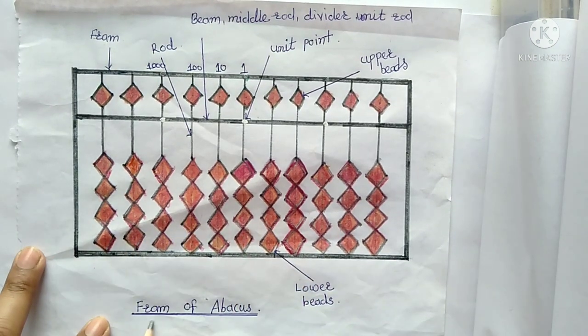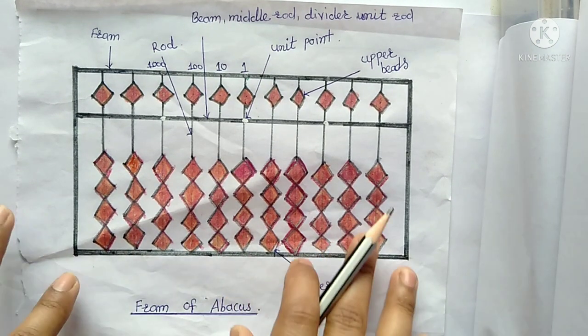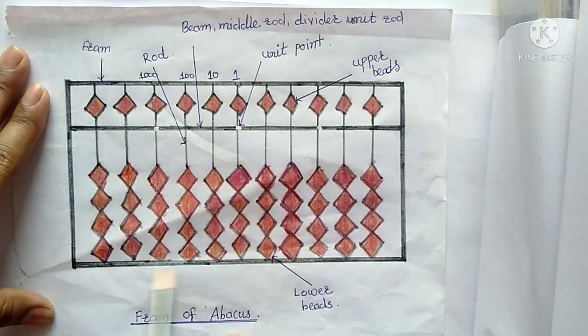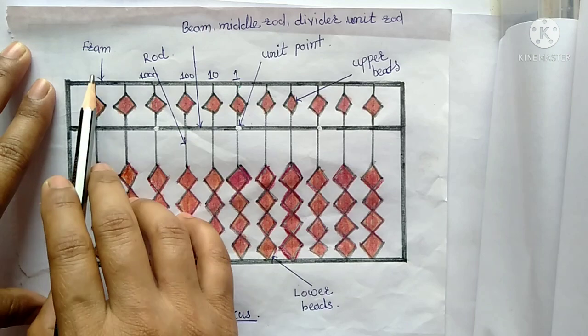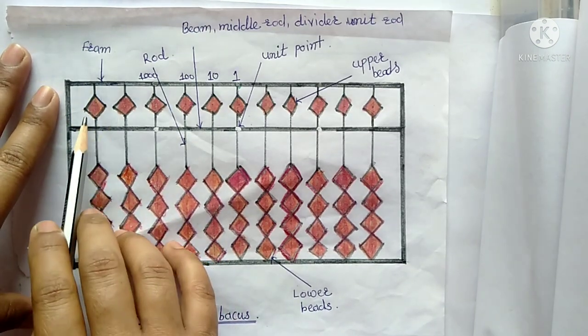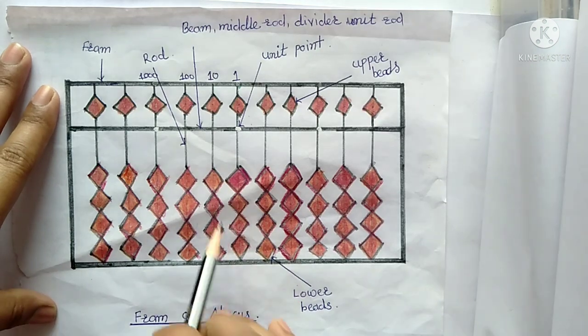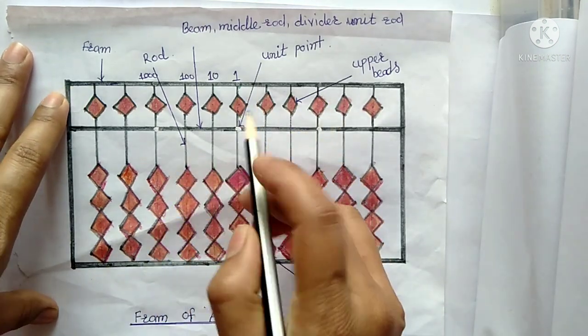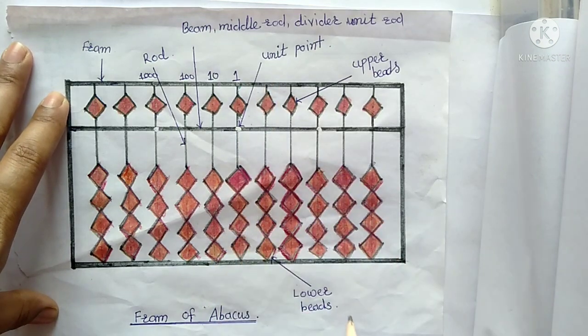That figure is called as the frame of abacus. Now in this figure the outer part is called as frame. And we can see here bits, this is called as bits. This is the upper bits and this is the lower bits.